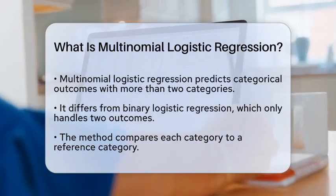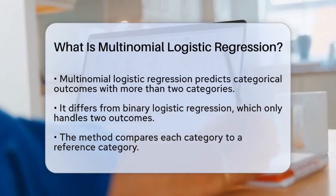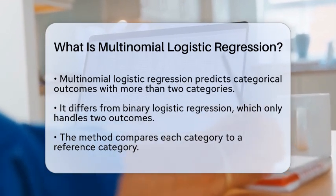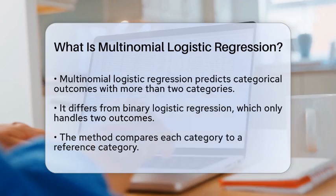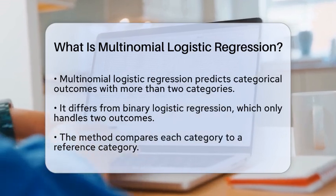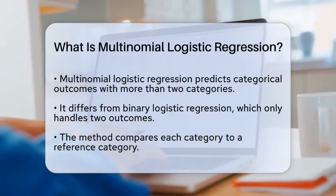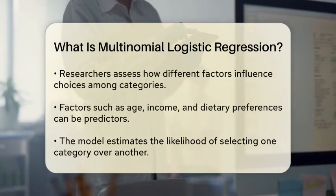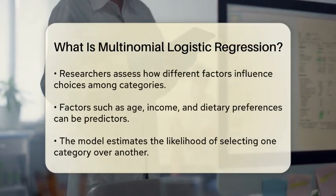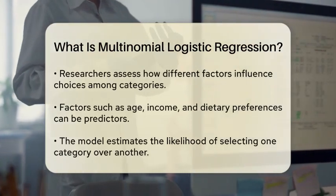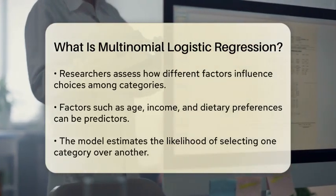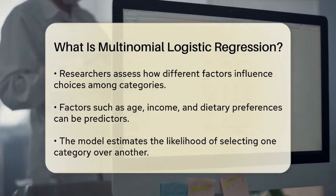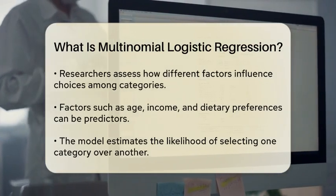Multinomial logistic regression is a statistical method used when the outcome variable is categorical and has more than two possible categories. And unlike binary logistic regression, which deals with two outcomes, multinomial logistic regression can handle multiple categories simultaneously.